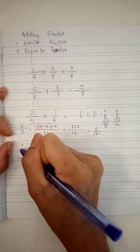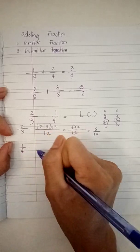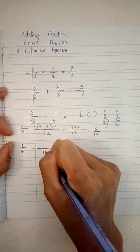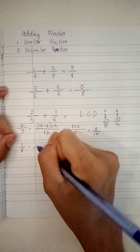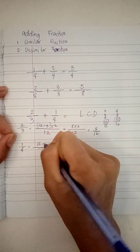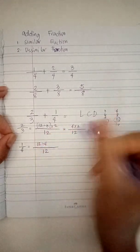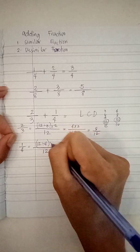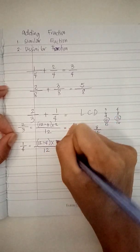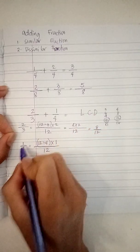Now, we proceed to one-fourth. It would be, copy the common denominator, which is twelve. Twelve divided by four. Open, close parenthesis to specify. Times one, which is the numerator.